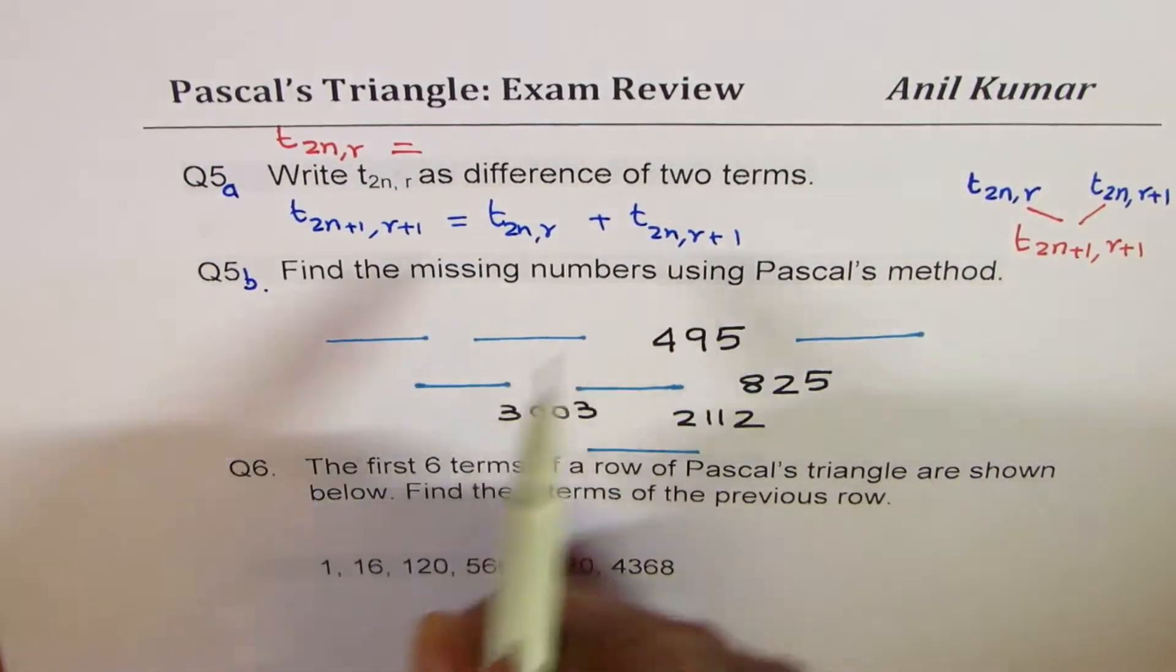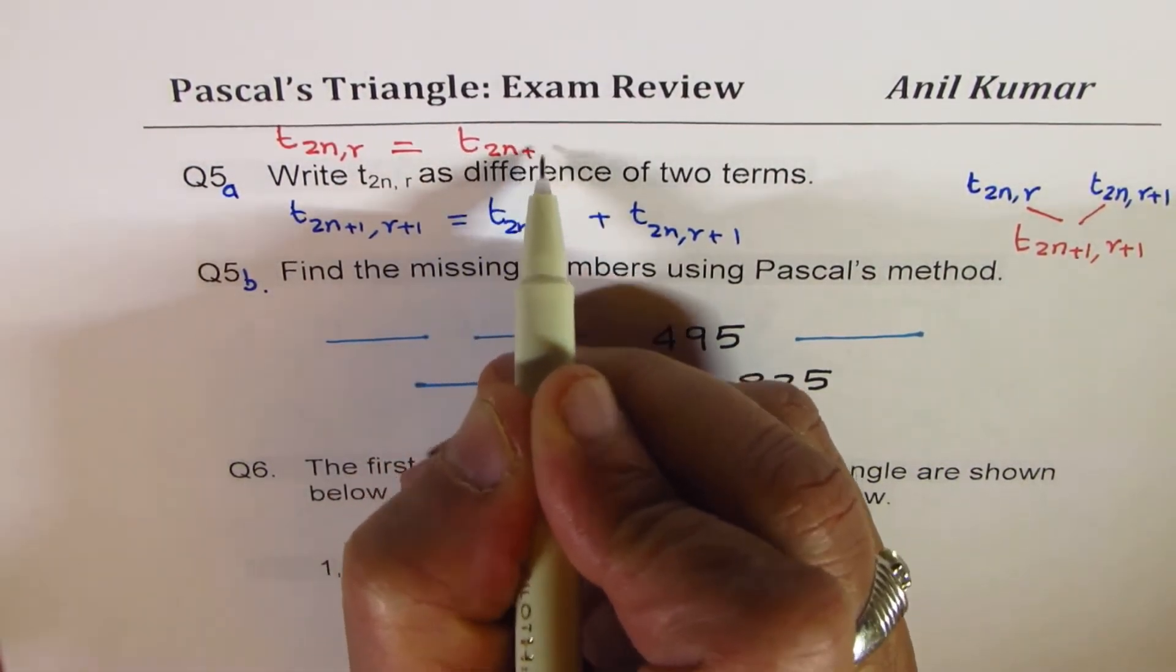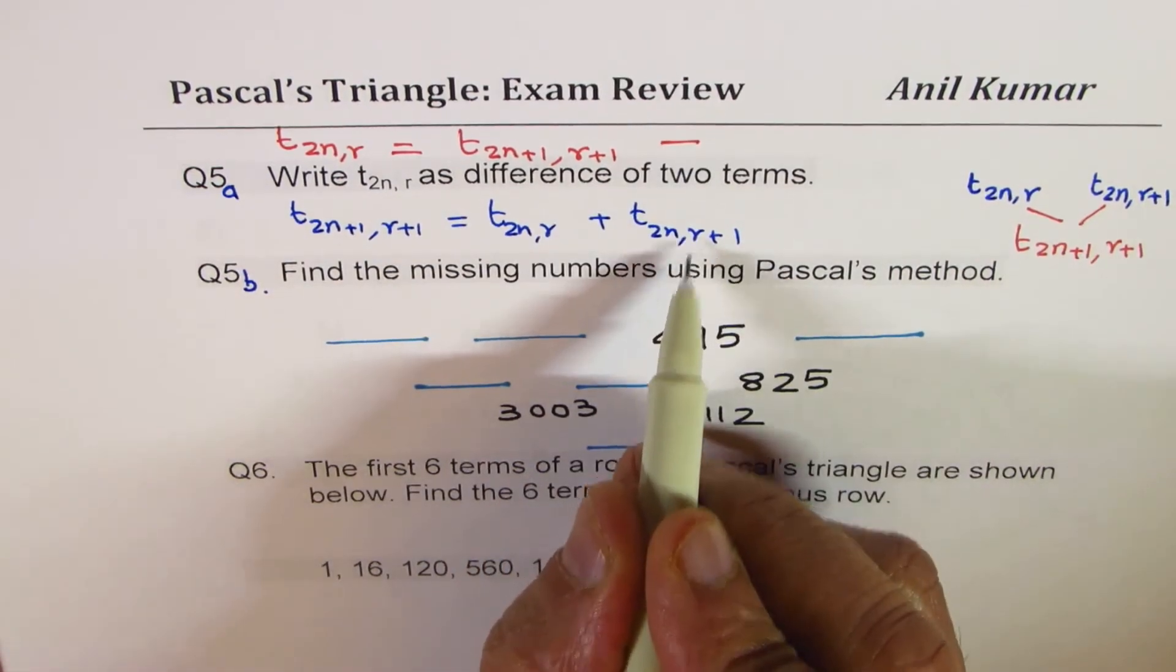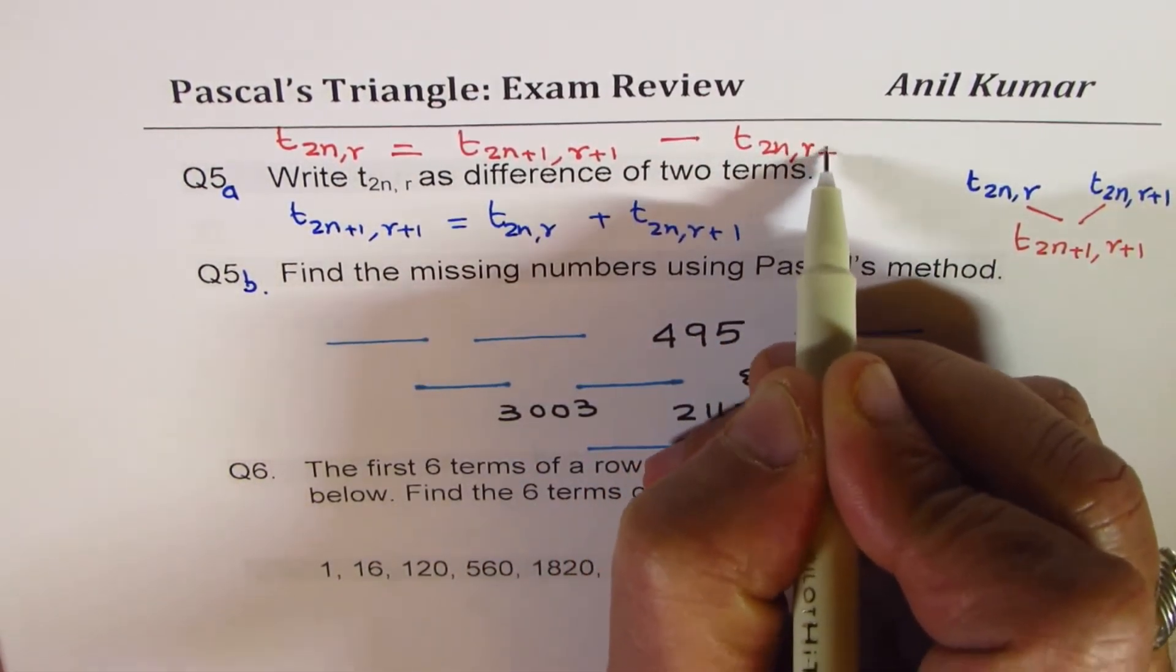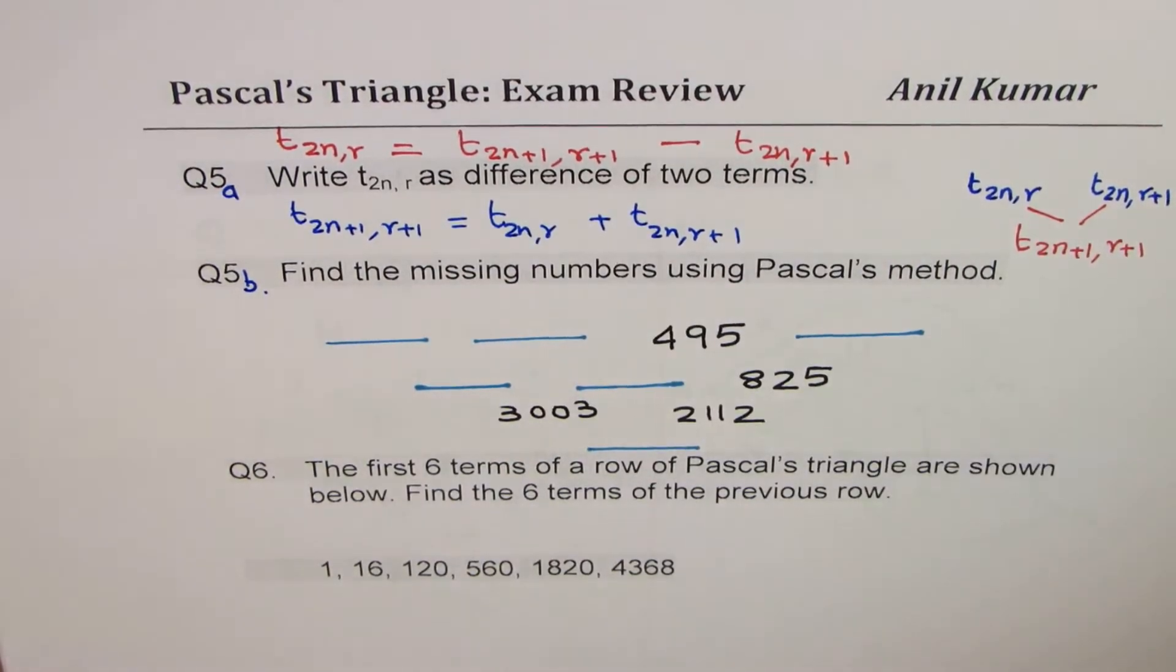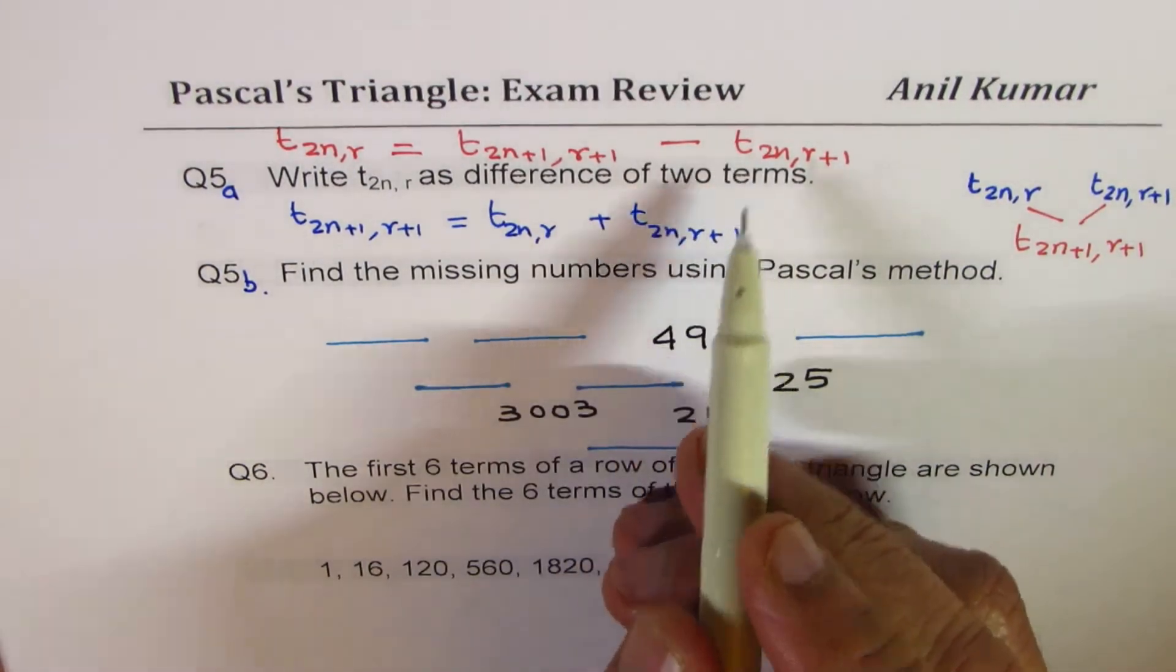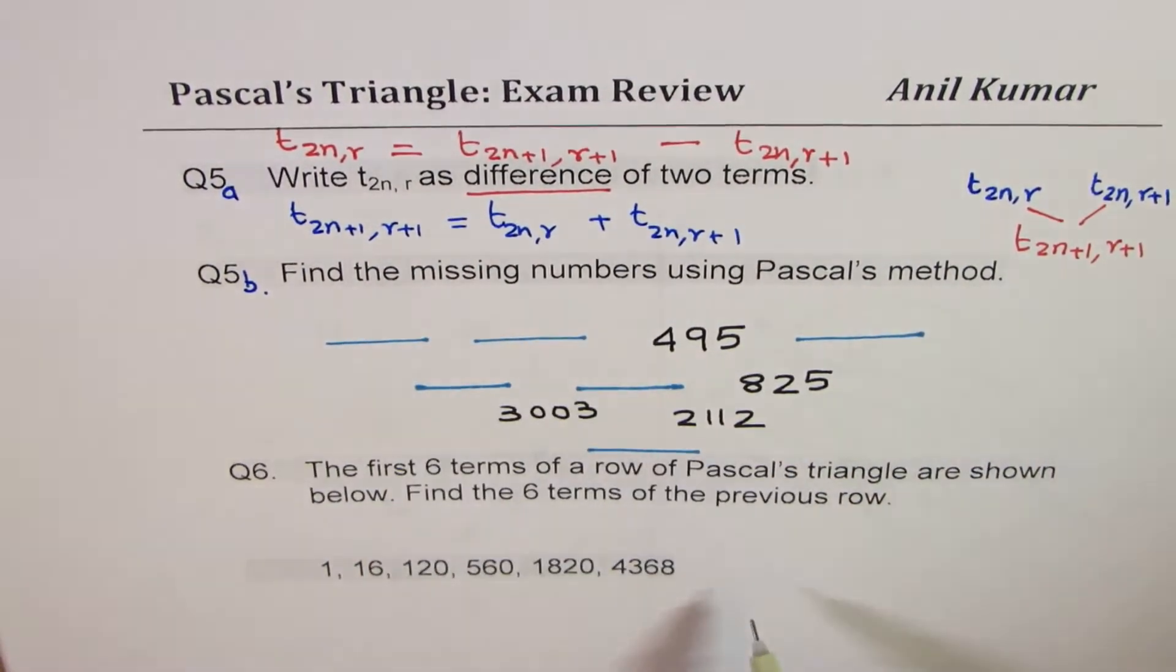Now, if I have to write t2nr as a difference, that means, this has a difference. I will take this on the left side. So I can write down my answer as, t2nr is equal to this term, which is t2n plus 1r plus 1 minus that term, t2nr plus 1. So that is how you can write this as a difference. Important thing is, you have to write as a difference, not sum.